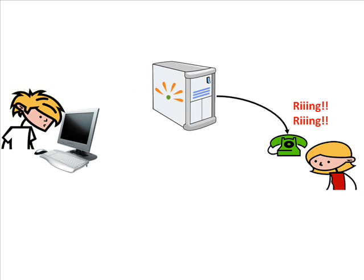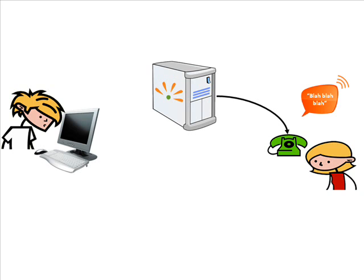The server establishes a call to Maria, that is the contact that we have chosen. And as soon as she answers it, she will hear an electronic voice saying this is a shout message and my message follows. She will see my number calling, so she knows it's me who's calling and she will hear my voice.